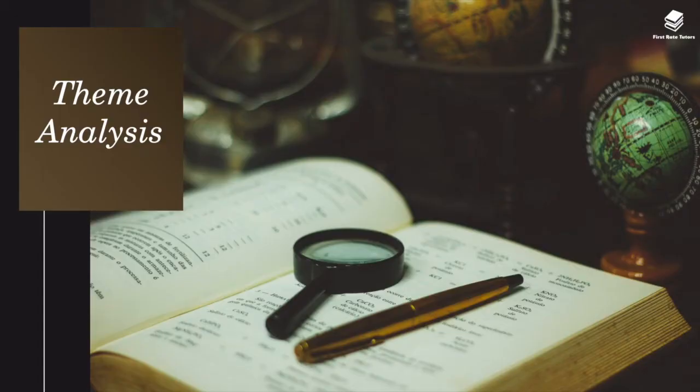On to theme analysis. The triumph of good and the restoration of order. Most detective fiction involves the satisfying restoration of order by a brilliant detective after a cunning and malicious evildoer has committed some crime. In a Sherlock Holmes novel, the reader has no doubt that Holmes will solve the case even before finishing the first chapter. Christie leans even more into this pattern in The Murder of Roger Ackroyd. The reader has no doubt that Poirot will solve the case because Dr. Shepard, writing after the fact, repeatedly reminds the reader that Poirot has already done so. The question is not if order will be restored and good will triumph, simply how.